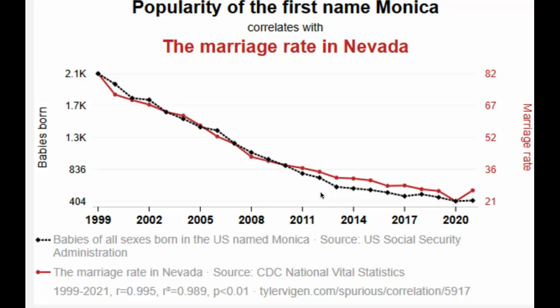That's as far as the statistics go. Now, what about the meaningfulness? You can think for yourself: should the first name Monica have anything to do with the marriage rate in Nevada — like causally? Very likely there's no causal effect here. Simply, the marriage rate has been going down and the popularity of first name Monica has been going down, and they just happen to coincide. So it's a spurious correlation.